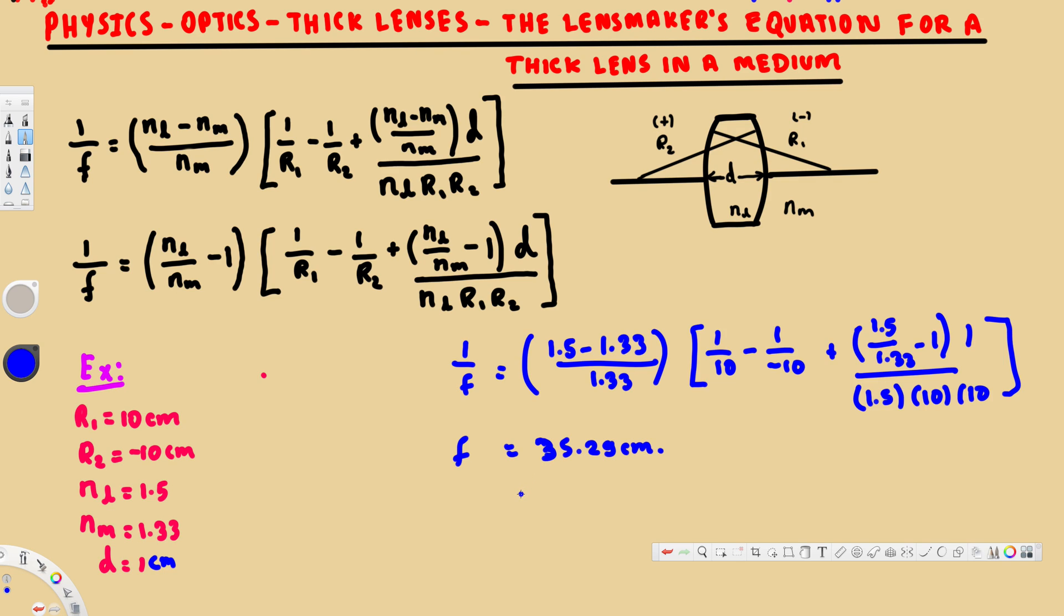In the previous one, when the medium was air, we had 10.17, and here we're getting 35.29 centimeters. That's a huge difference, and that's how we do this kind of problem. I hope this helps. Thanks for watching.